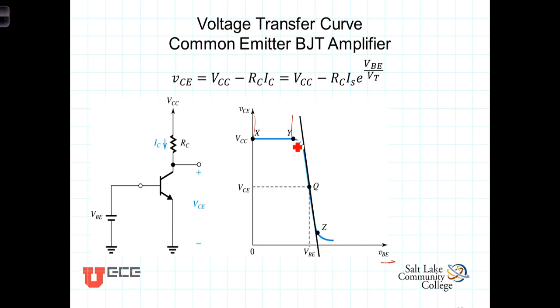We have the active region here where VBE is not yet great enough to cause the current, the transistor, into conduction. This is referred to as the cutoff region. Then there's the region of linearity that corresponds to that area here, and we call that the active region.